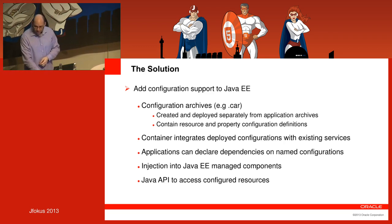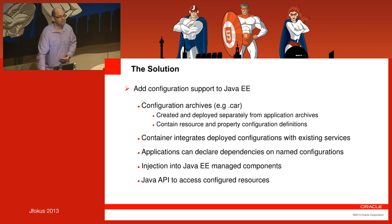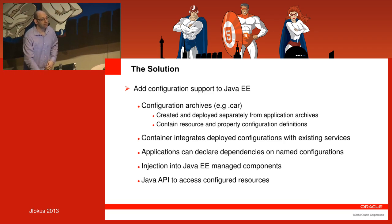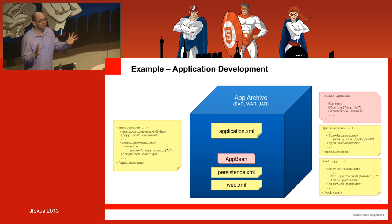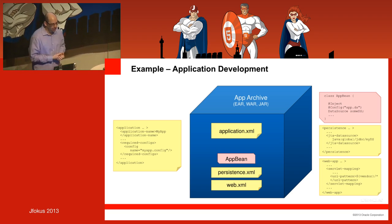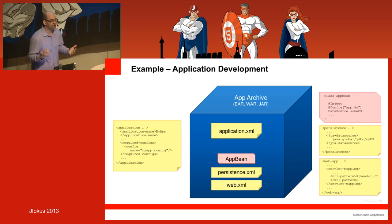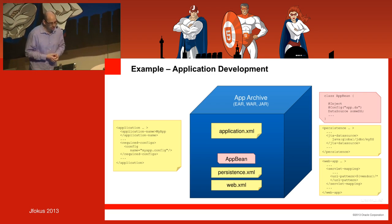In addition to injection, you'd also like to have a Java API to access configuration from the application — to look up properties or different resource definitions and potentially even add them on the fly. Here's a flow to illustrate: I have an application archive — it may be any kind of archive: EAR, WAR, JAR. There's potentially an XML file, an application XML, that defines the application name and has a dependency on a configuration. You can see there's a required-configs element, and I've said I require myapp.config — configurations are named.